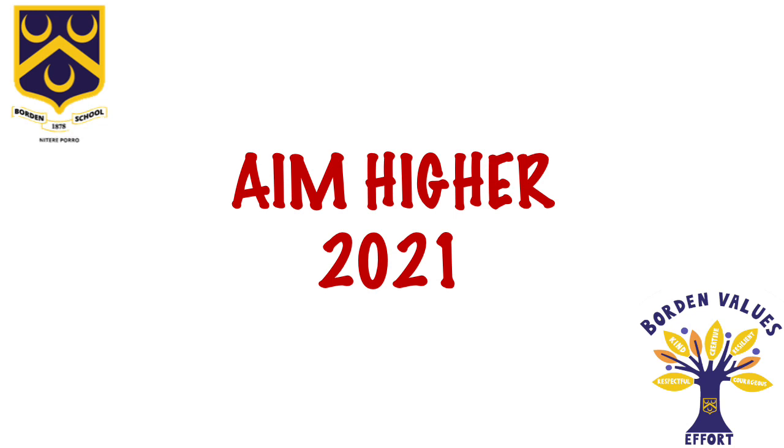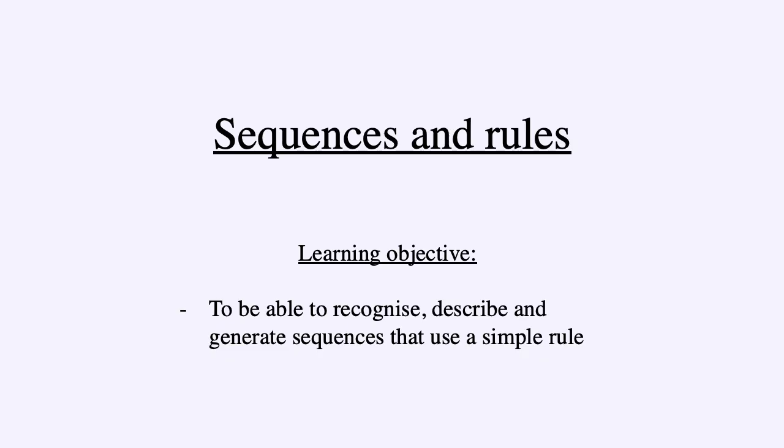This week we're going to do maths, and today I thought we'd do a lesson that you will have when you start here next September as Year 7 — we'll look at sequences. We're looking at algebra, looking at the relationship between things. The learning objective is to be able to recognise, describe, and then generate sequences that use a simple rule.